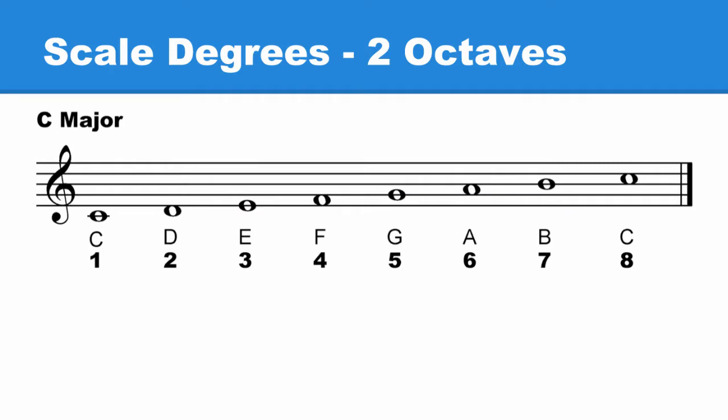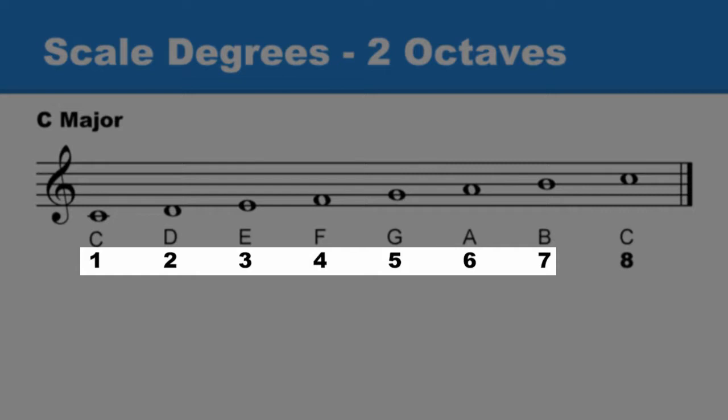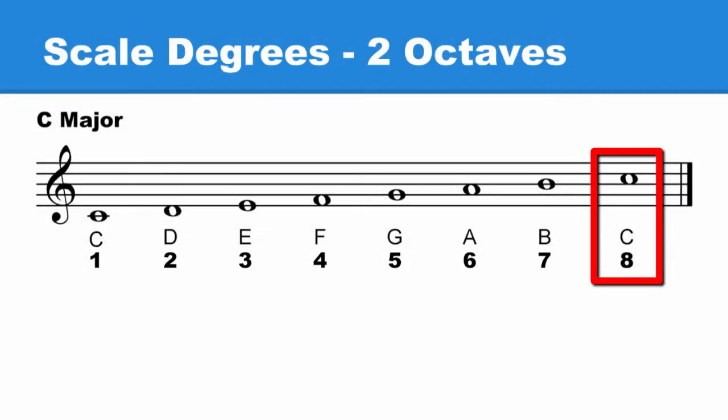For example, the one octave scale, the one we've been using so far, shows scale degrees one through seven. Eight is where the octave starts over.